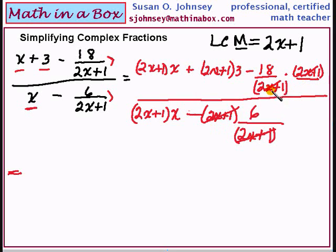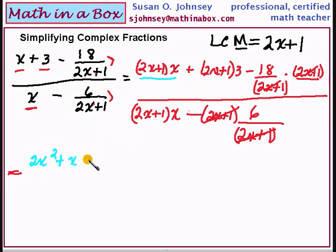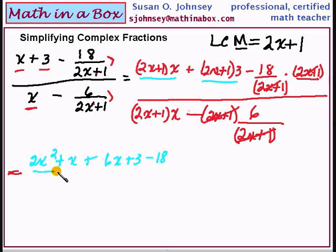Starting in the numerator, that will be 2x squared plus x. And then the next one — that will become 6x plus 3. And then we have the negative 18 still there. Then in the denominator, I am going to multiply this part out: that will be 2x squared plus x, and then negative 6.